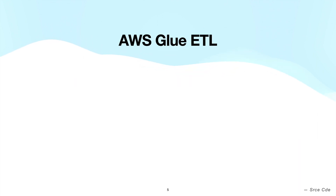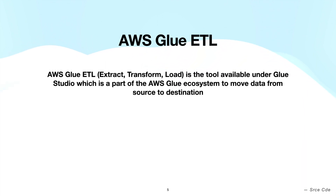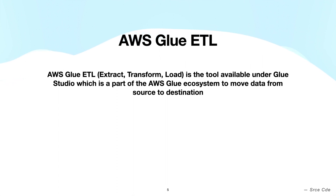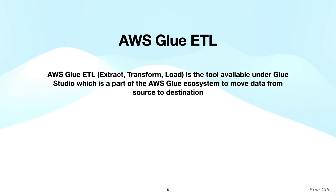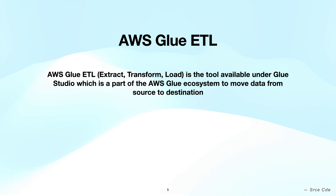AWS Glue ETL is the tool available under Glue Studio, which is a part of the overall AWS Glue ecosystem, to move data from source to destination with some transformation. That's a high-level definition of what AWS Glue ETL is.